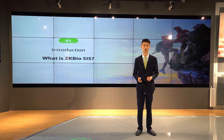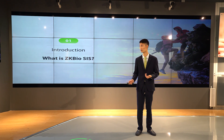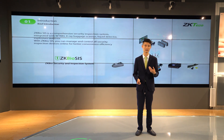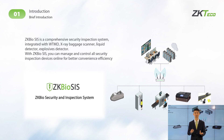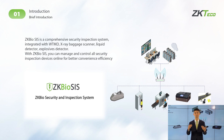So first, what is J.K. Fire SIS? Based on J.K. Fire Security V5000, J.K. Fire SIS is a comprehensive security inspection system, integrating walkthrough metal detector, baggage scanner, under-vehicle scanner, liquid detector, and explosive detector. With this software, you can control and manage all the security devices online. It is convenient and highly efficient.